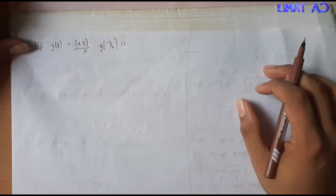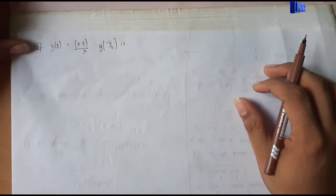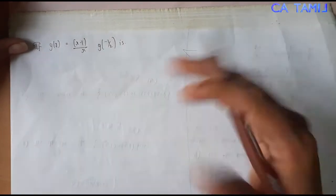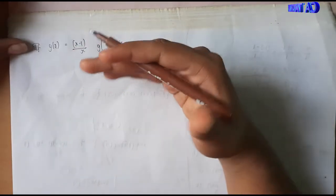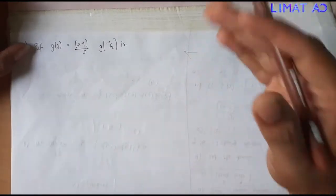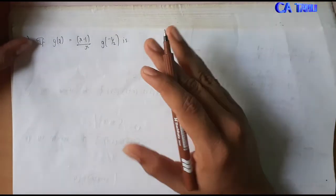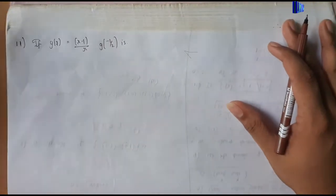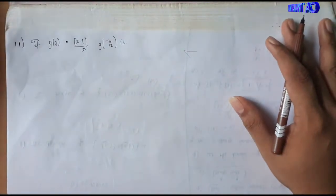Welcome to CA Thamil channel. CA Foundation Business Mathematics, Chapter 7B. In this chapter, we covered problems 1 to 10 in the previous video. Now we move to problems 11 to 20. So now we can find the 10th sum.